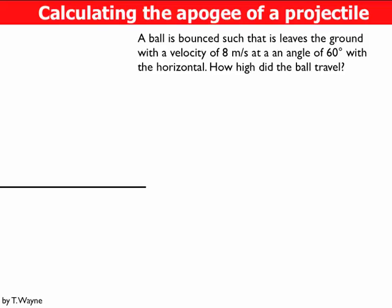So here's the question. A ball is bounced such that it leaves the ground with a velocity of 8 meters per second at an angle of 60 degrees with the horizontal. How high did the ball travel? In this case, I'm looking for the height up to apogee.